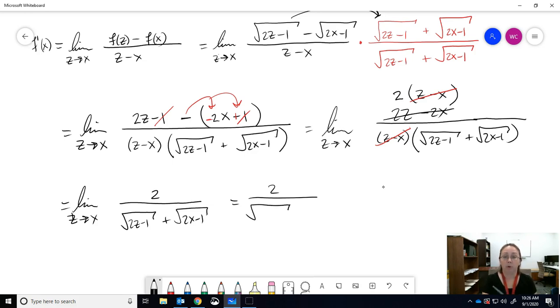So we have 2 over the square root. So Z approaches X. So that means the Z changes to X. So we have 2X minus 1, instead of 2Z minus 1, plus the square root of 2X minus 1. It didn't go to 0 over 0. Great.